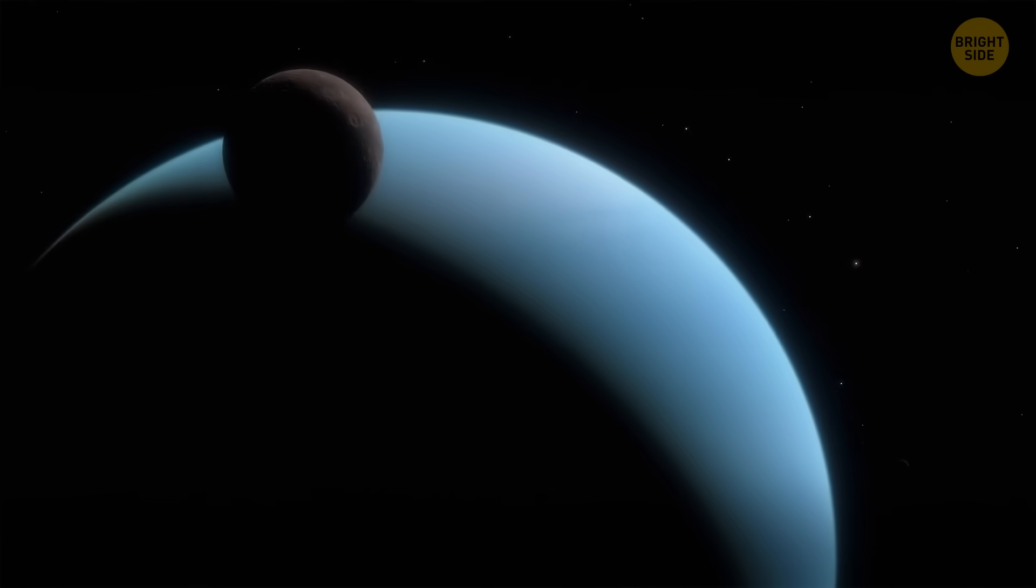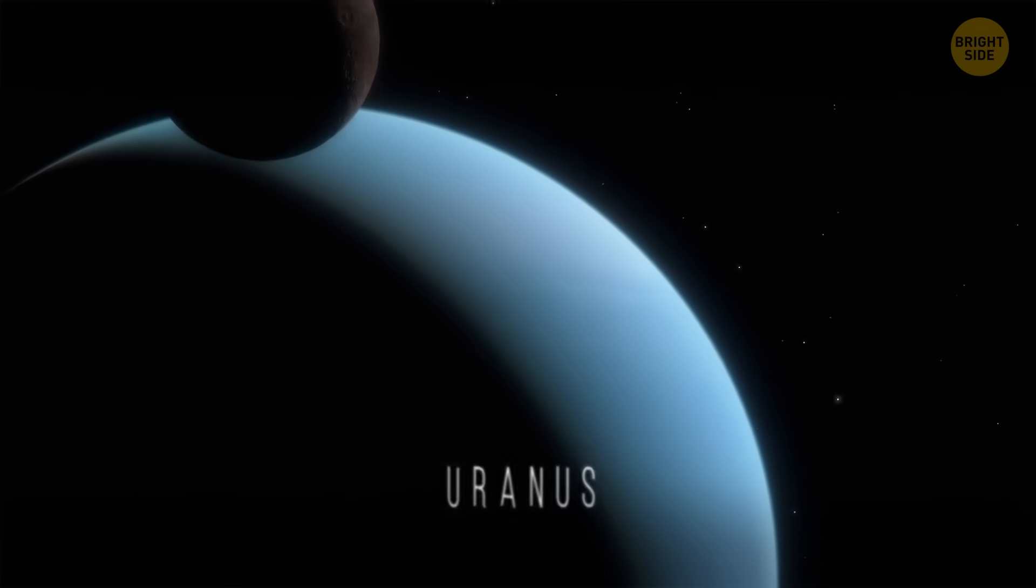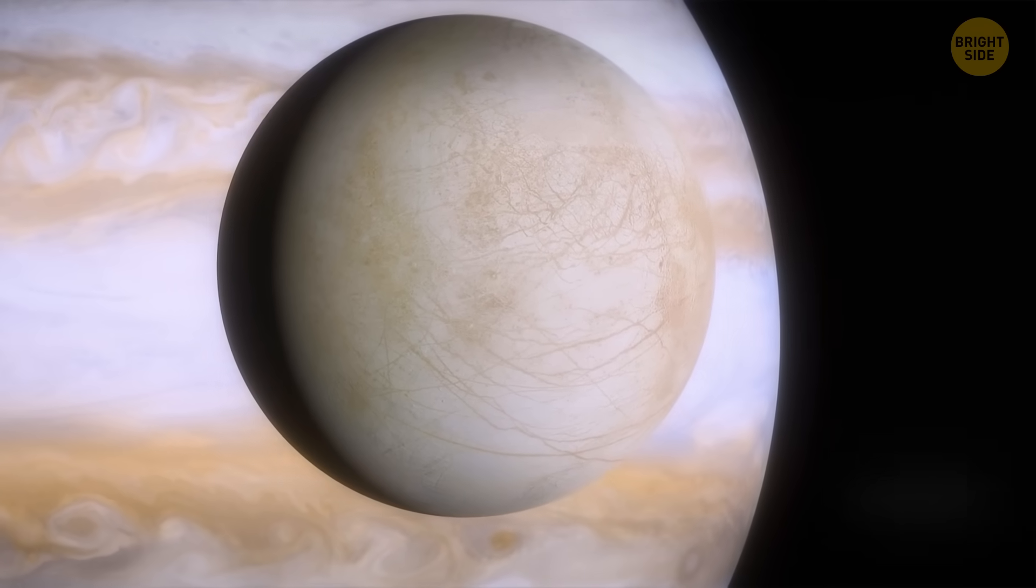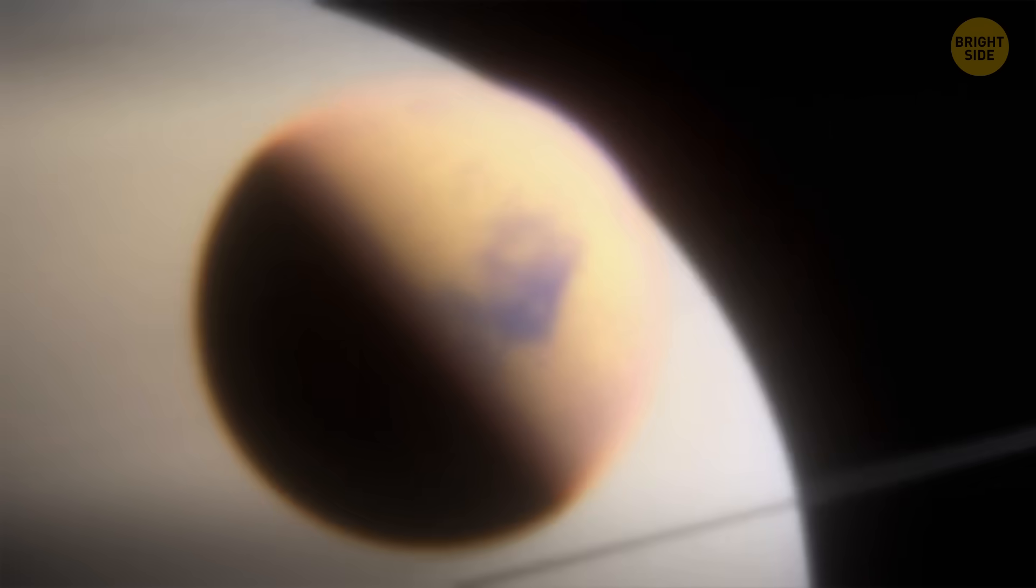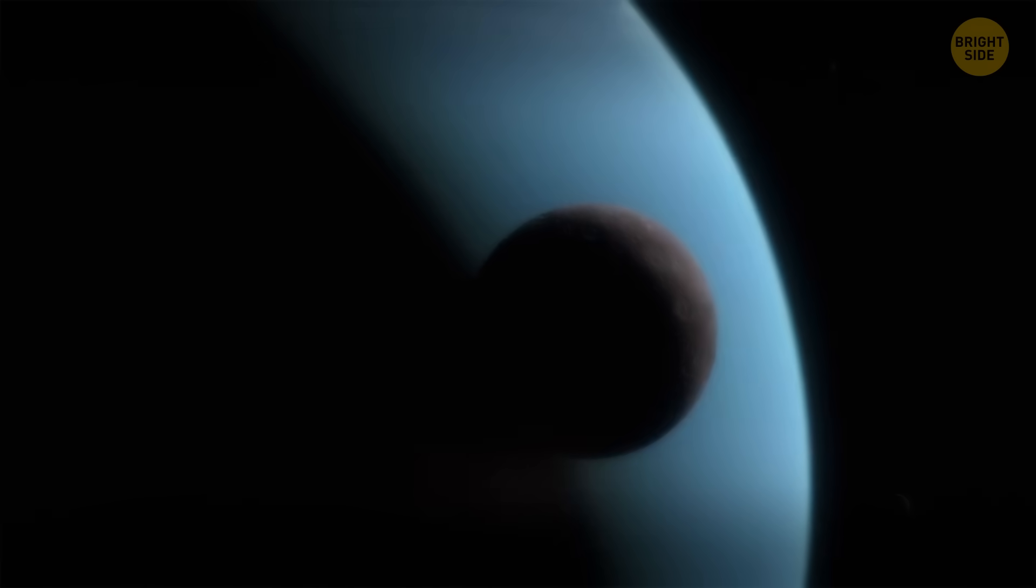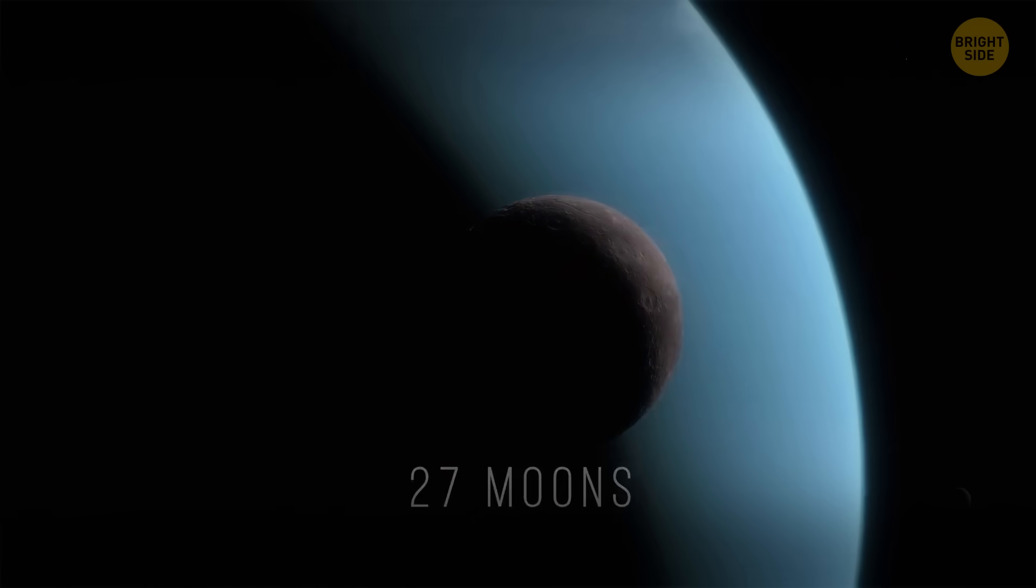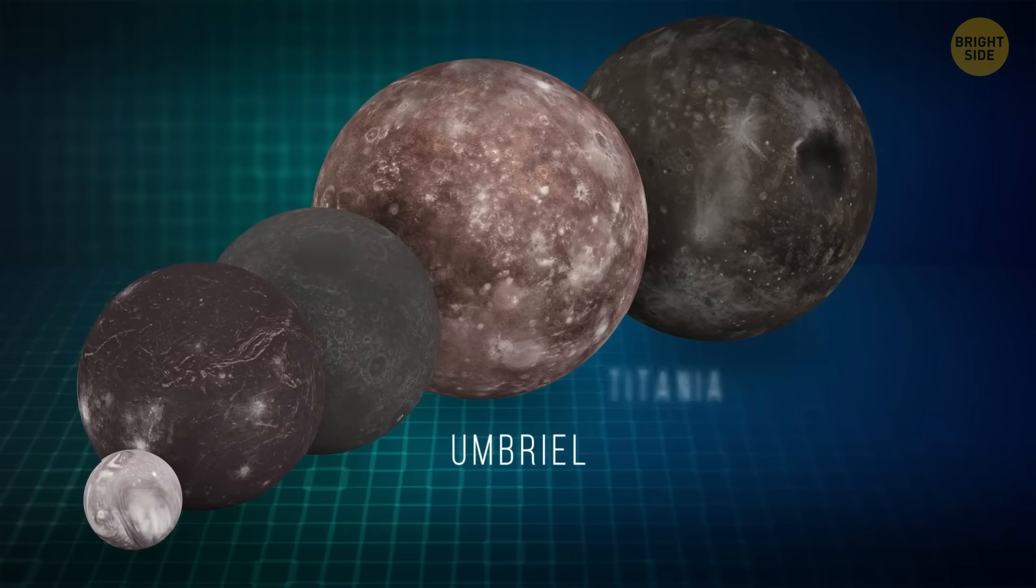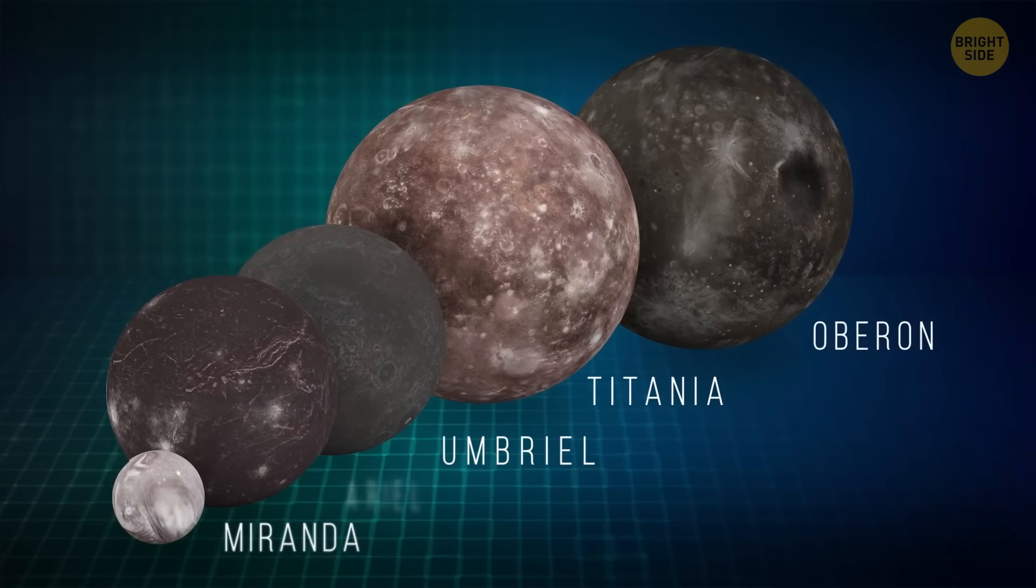It's possible there are oceans hidden under the surface of the moons surrounding Uranus. Scientists have also been investigating the oceans on Jupiter's moon Europa and Saturn's moon Enceladus. These oceans are hidden below the moon's icy crusts. Uranus has 27 moons. Five of them are especially big: Umbriel, Titania, Oberon, Miranda, and Ariel.